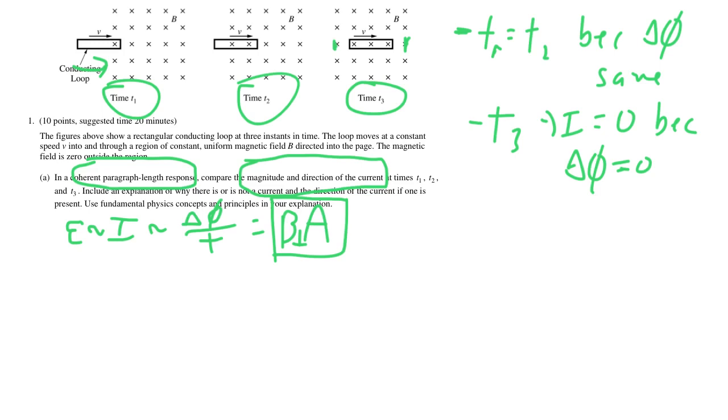So we also want to find the direction of the current. Remember Lenz's Law. We use that and Lenz's Law essentially says that the direction of the current is going to induce a magnetic field that opposes the change in flux. So for example, as we look at this, let me draw a zoomed in view.